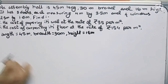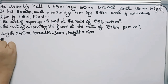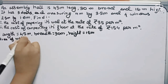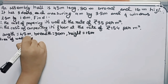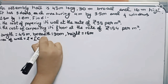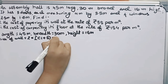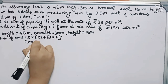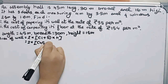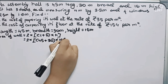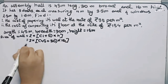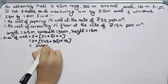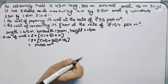Therefore, now I have to find the area of 4 walls. The formula is 2 into (L plus B) into H. Putting in the values: 2 into (45 plus 30) into 16, it becomes 2400 meter square. So this is the area of the 4 walls.